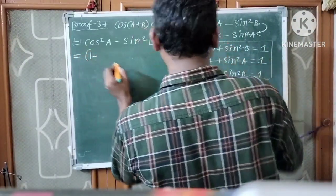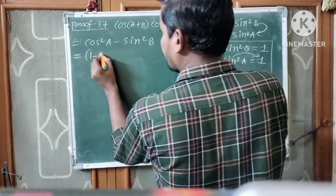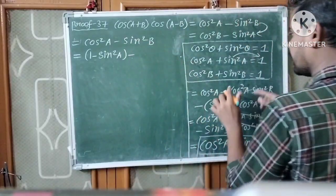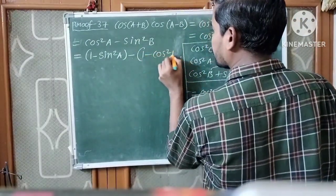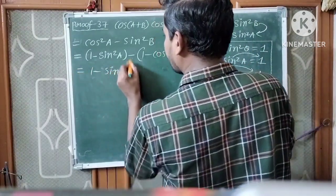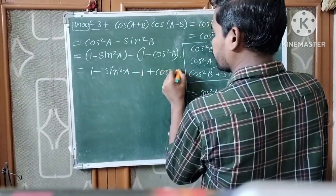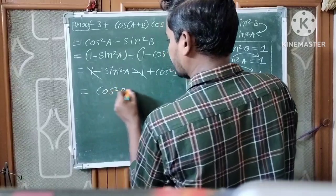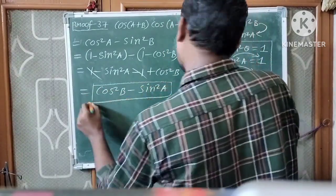cos²A can be written as 1 minus sin²A, and sin²B can be written as 1 minus cos²B. So: (1 minus sin²A) minus (1 minus cos²B) = 1 minus sin²A minus 1 plus cos²B. The 1 and minus 1 cancel, giving cos²B minus sin²A.